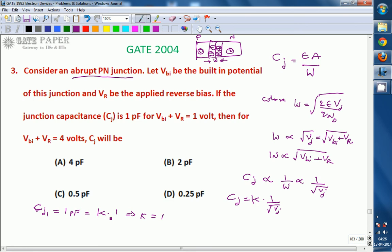So now, by using this equation, Cj for VBI plus VR equals 4 is 1 by root 4, which is 1 by 2. That is 0.5 picofarad.